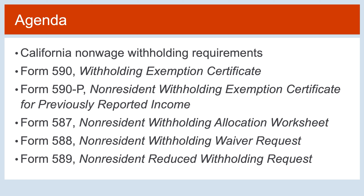In this video, we will review the following California non-wage withholding requirements: Form 590 Withholding Exemption Certificate, Form 590P Non-Resident Withholding Exemption Certificate for Previously Reported Income, Form 587 Non-Resident Withholding Allocation Worksheet, Form 588 Non-Resident Withholding Waiver Request, and lastly, Form 589 Non-Resident Reduced Withholding Request.